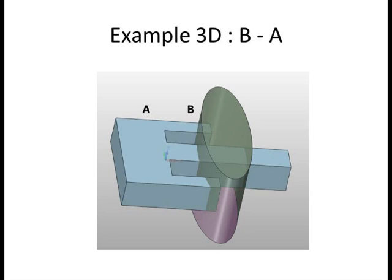So let's consider a 3D example. Here we have two shapes, a blue block-shaped figure and a green oval shape. We'll call the blue shape A and the green shape B. And we want to compute the Boolean operation corresponding to the set difference B minus A.